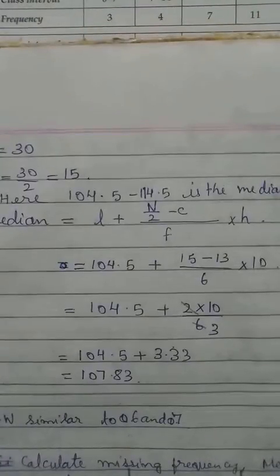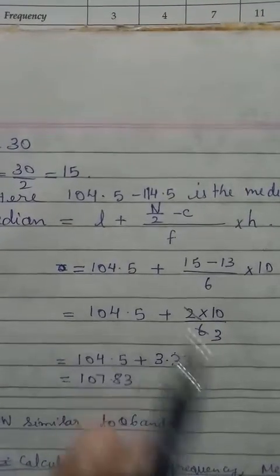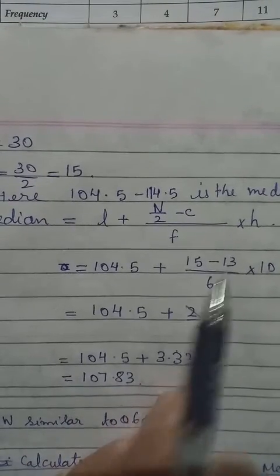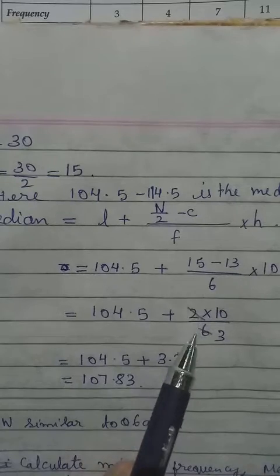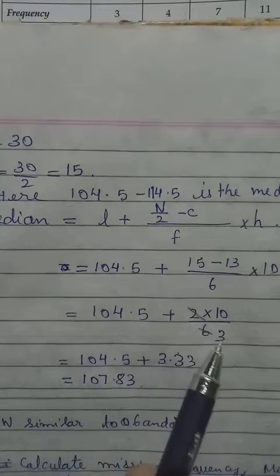So now let us replace it. Replace in the formula. So 15 minus 13, we have 2 into 10 by 10. So 2 and 6, you can cancel. 10 divided by 3. Then you can plus.